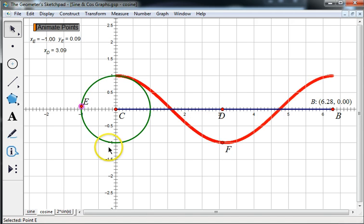If this shape looks a little bit familiar, that's because it is exactly the same shape as sine. It's just been shifted over pi over two units.